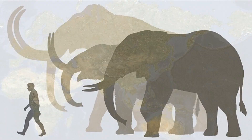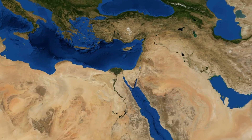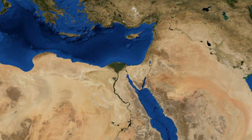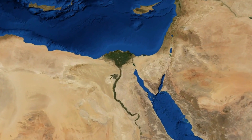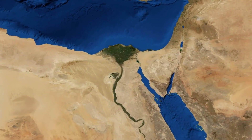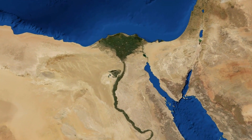Mammoths emerged in the middle of the Pliocene era in Africa and then spread to Eurasia and North America. They adapted to the cold over time. The oldest mammoth remains found are 4 million years old and were discovered in the Afar region of Ethiopia.